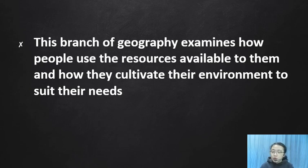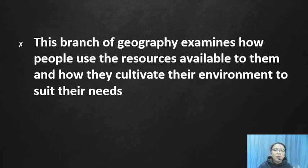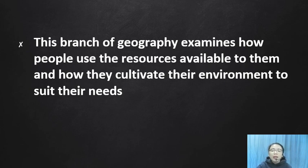To recap: geography is the study of interaction between the natural environment and the people living in it. There are two branches under it — human geography and physical geography. Physical geography studies the natural features of the Earth like climate, water, vegetation, and soil, while human geography studies the human population and the impact of its activities on the planet.